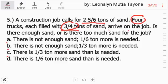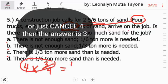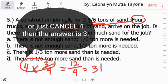So, ito yung mga choices. First, i-multiply natin ito. Ito daw yung apat na truck. Tapos, kada track mayroong 3/4 tons. So, i-multiply mo lang yan. This is 12 over 4 or 3 tons.